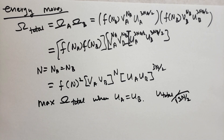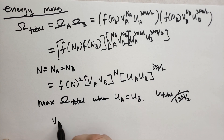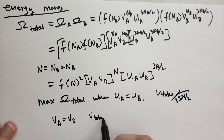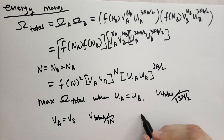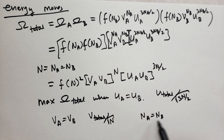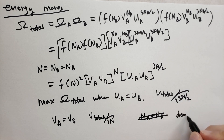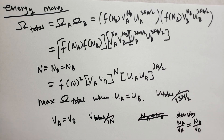What if we allowed energy and volume to be exchanged — so we have some kind of piston and the volumes can push on each other? Using the same formula, if the two sides have the same number of particles, the maximum would occur at Va equals Vb. The peak would be the total volume divided by the square root of the number of particles — again a very small number. And if we allow particles to travel freely between them, the particle density NA/VA would come to equilibrium with NB/VB, with a very narrow width there as well.